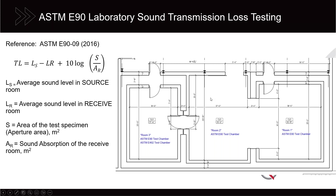We also measure the decay times — similarly to the ASTM C423 method — to determine the presence of sound absorption in the receive room, and that correction is applied. In this laboratory environment we control the temperature and humidity, maintaining them constant in these spaces. The construction of the chambers is such that all other paths transmit sound more weakly than through the sample by a significant enough margin that we have confidence that most of the energy we're measuring in the receive room is coming through the opening. That's why we can use the correction for the area of the sample.